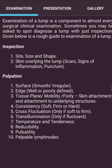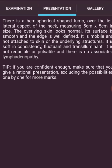Assess tissue plane mobility or fixity — that is skin attachment and attachment to underlying structures. Consistency: soft, firm or hard. Cross fluctuation — only if soft to firm. Transillumination — only if fluctuant. Then temperature, tenderness, reducibility, pulsatility, and palpable lymph nodes.